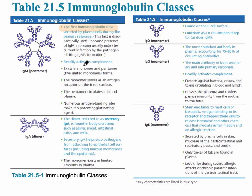The most important things are what you see here in blue. The next one is IgA — the structure is not important. IgA is always present in our body secretions like saliva, sweat, intestinal juice, and milk. Specifically, IgA helps to stop pathogens from attaching to epithelial cell surfaces like the mucous membranes and the epidermis.